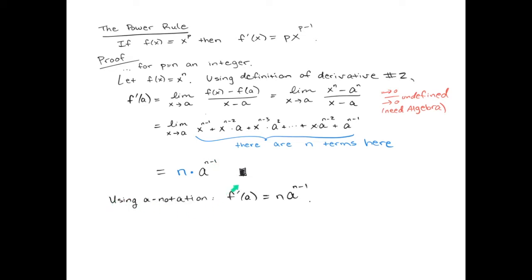So using the a notation, the derivative is n*a^(n-1). If you wanted to use x notation, the derivative is n*x^(n-1). And we also have this alternate notation where d/dx just means take the derivative of x^n power, and you obtain n*x^(n-1).